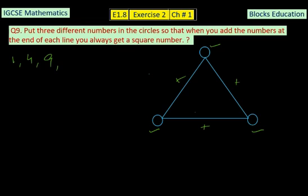So these are the square numbers. It means that when you add these numbers in the corner in one line, that should be a square number. If you make some combination, you come to know that this number is 0, this number is 9, and this number is 16. 0 plus 9 is 9, which is a square number. 9 plus 16 is 25, which is a square number. And 16 plus 0 is 16, which is another square number.